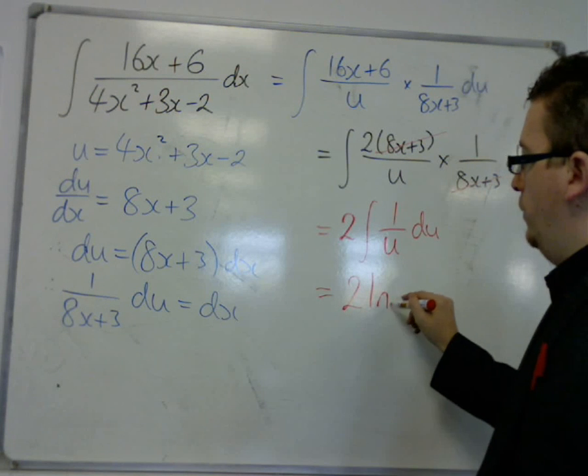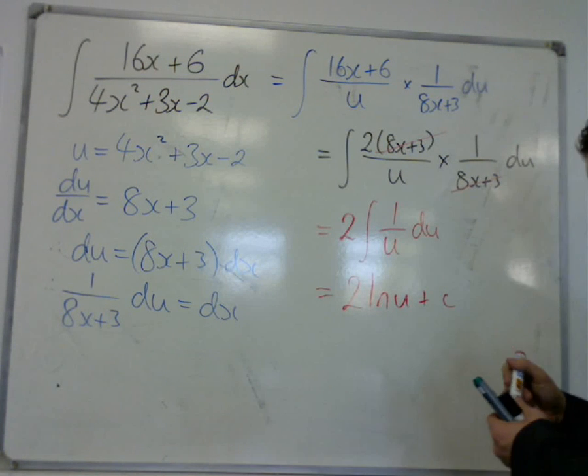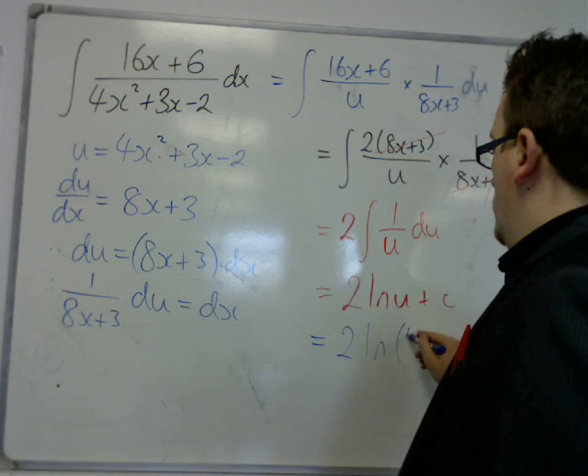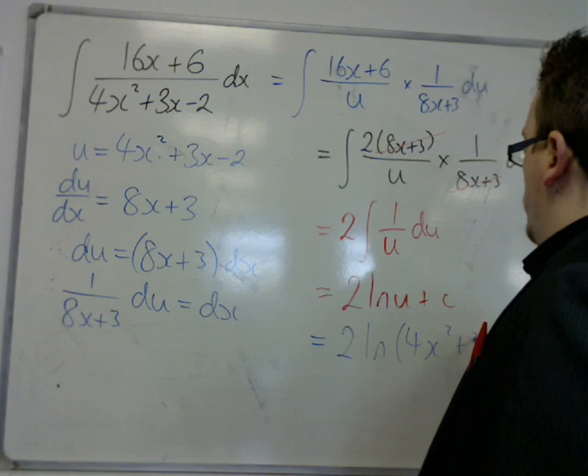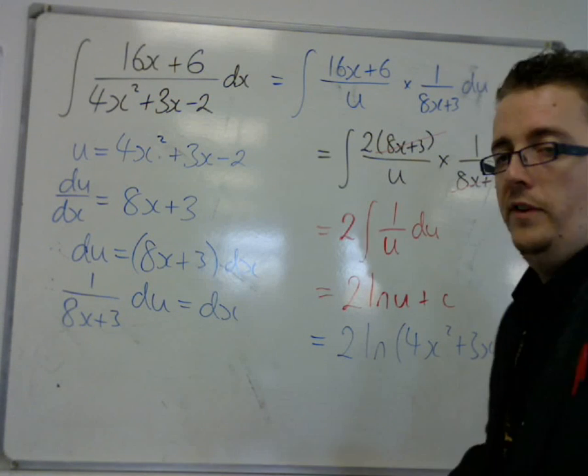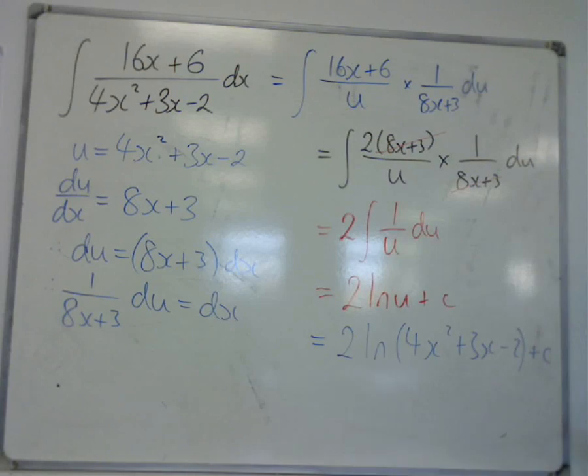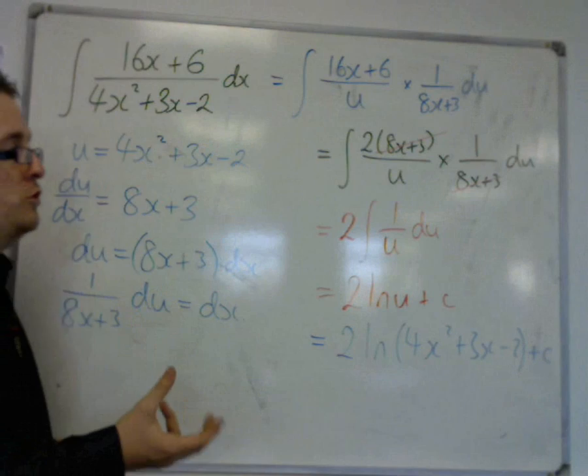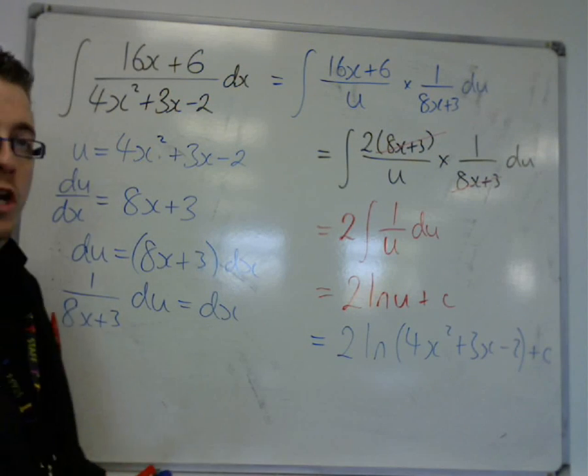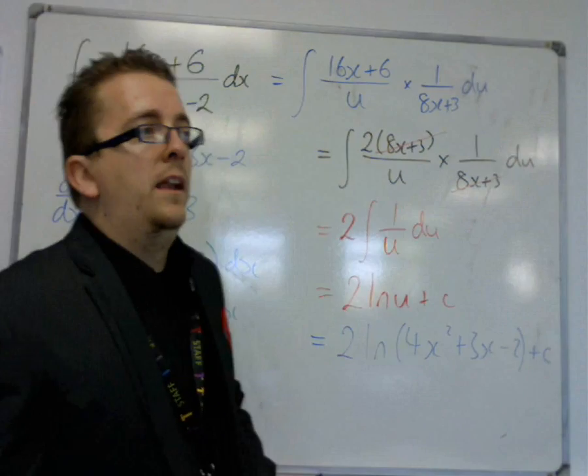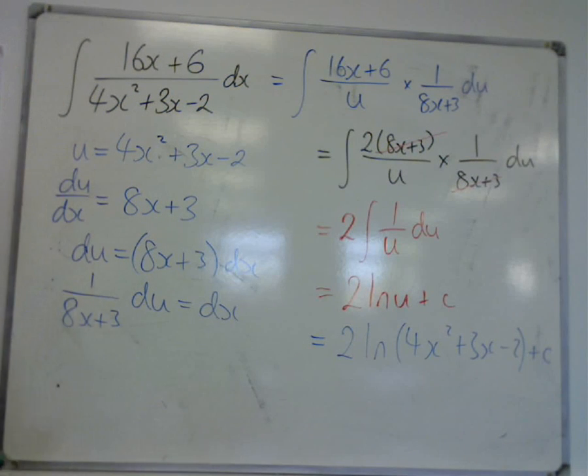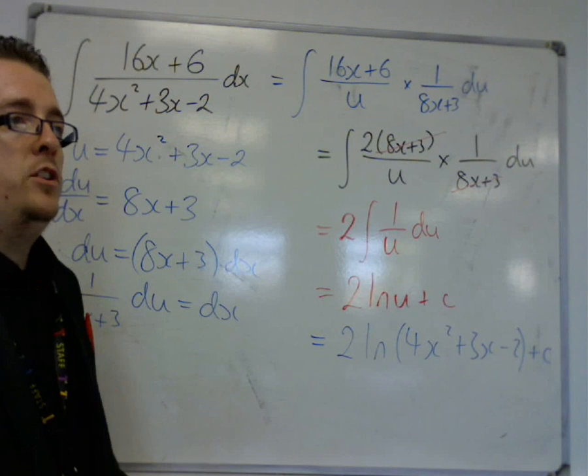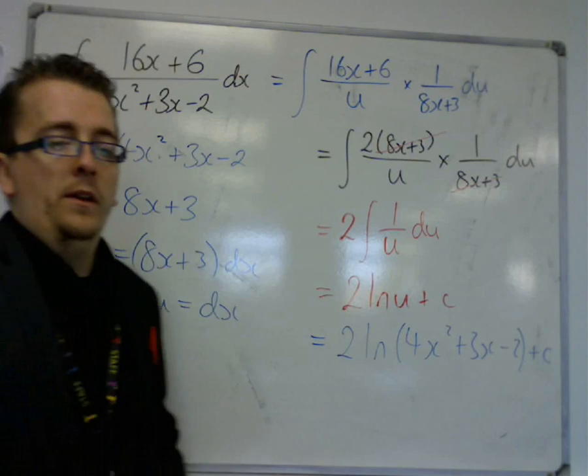And you just get left with this, which is 2 lots of log u plus c. And the u was 4x squared plus 3x minus 2. And I've got that plus c on the end. So, that's a more complicated looking example. This is using integration by substitution. And it's really showing you that the log trick, like reversing chain rule, is really... You're actually doing integration by substitution, but you're not showing all the working steps.